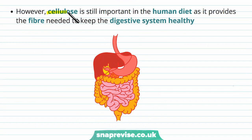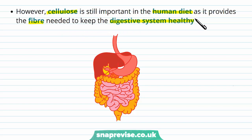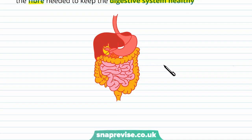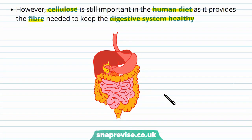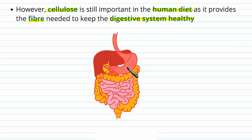We also need cellulose, because in the human diet cellulose provides fibre. This is needed to keep the digestive system healthy. We don't have the cellulase enzyme, but we do eat fibre, which even though it doesn't get digested, does keep our digestive tract a lot more healthy.